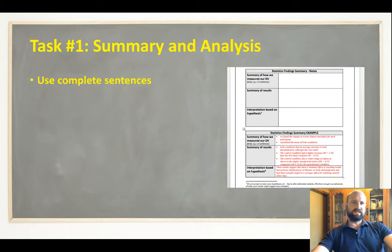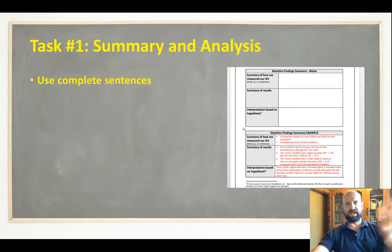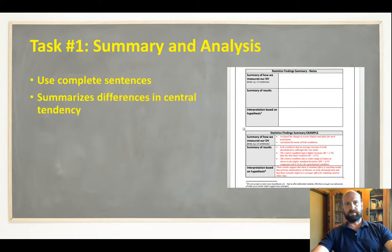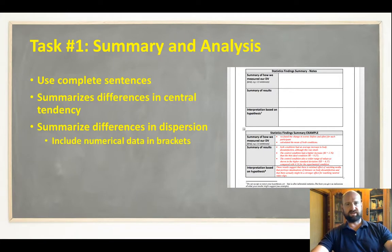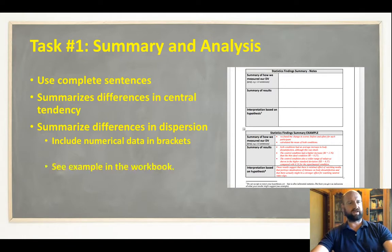And this is surprisingly tricky for students — doing the summary and analysis. All they're doing is writing out the results in sentence form. They summarize the differences in central tendency and dispersion, stating the results, but there might also be a bit of commentary here as well. I've just put an example of this.